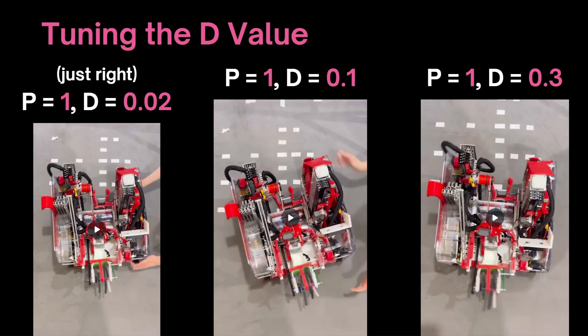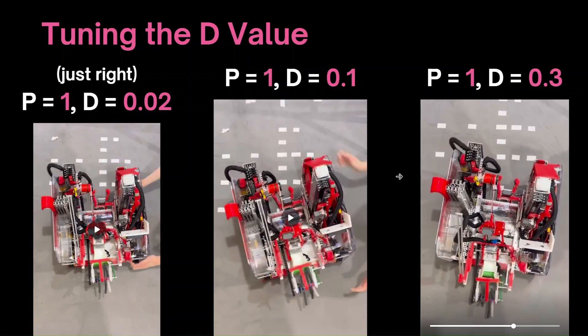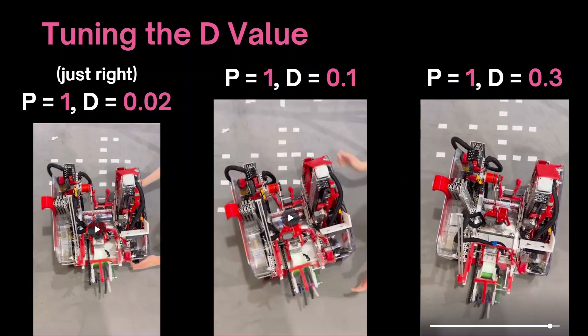Now we can start with tuning the D-value, and this will help dampen the oscillations while the robot is correcting back. However, increasing it too high will create really undesired effects and only saturate the oscillation to make the robot barely functional.